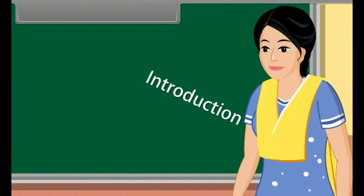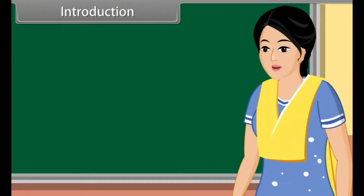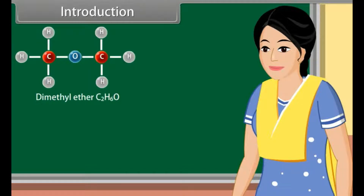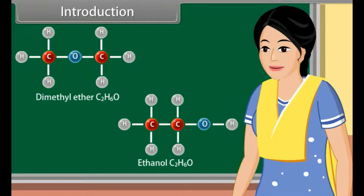Today we learn isomers and concepts used in organic reaction mechanism. The organic compounds which have same molecular formula but different configurations are called isomers. The examples of isomers are dimethyl ether and ethanol. They have same molecular formula but different configuration.